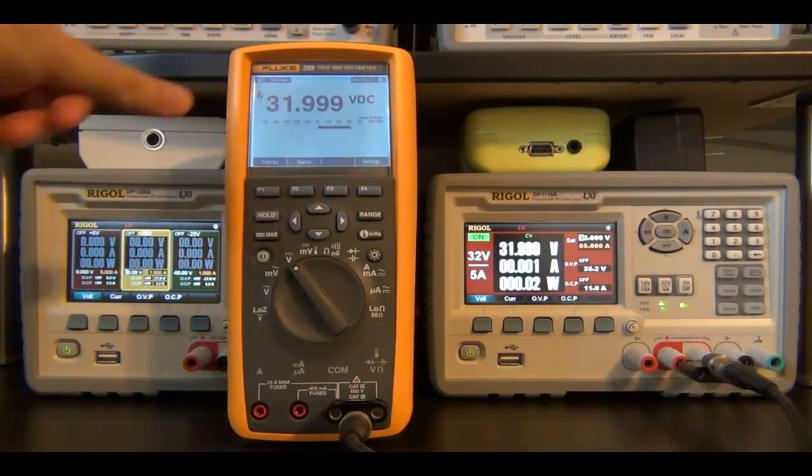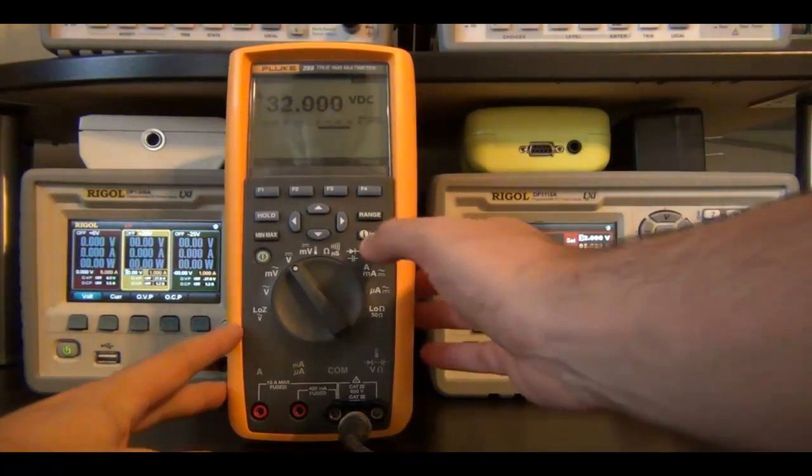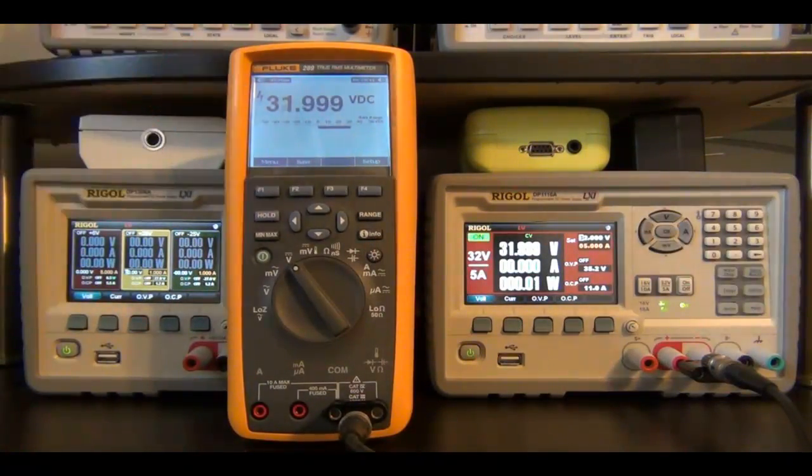And now you can see the little spark symbol appears here, just letting you know the voltage is high enough to might cause some shock under some situations. That's why this color is red when it's in this condition. So let's measure some current.